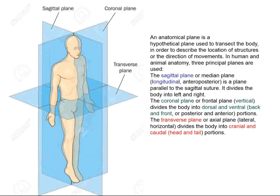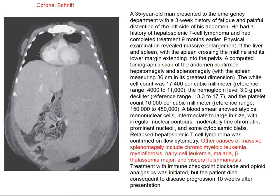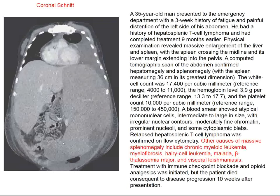As a brief note on anatomical planes: the transverse plane, the sagittal plane cuts people in half right to left, and the coronal plane cuts them in half from front to back. Here's an example of an MRI in this patient where we can see this huge spleen reaching down into the pelvis, and here's the liver. I'm a little confused about which plane this is. At any rate, this is a huge spleen, and this is not a case of visceral leishmaniasis — this is a patient with a T-cell leukemia.